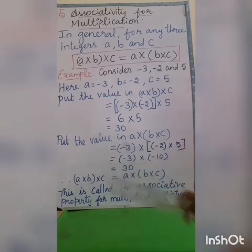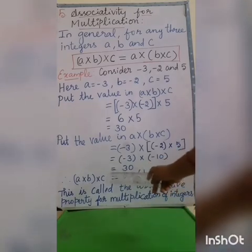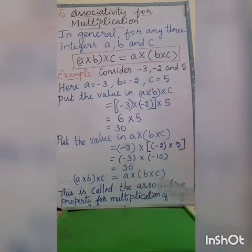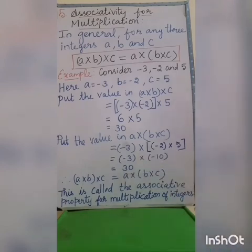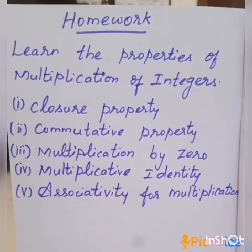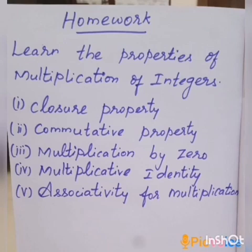So for associativity of multiplication, the LHS value and RHS value are both equal, confirming the associative property for multiplication of integers. Today's homework: learn the properties of multiplication of integers — closure property, commutative property, multiplication by zero, multiplicative identity, and associativity for multiplication. Learn the properties thoroughly. Thank you.